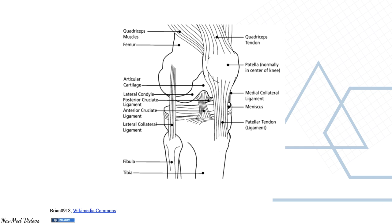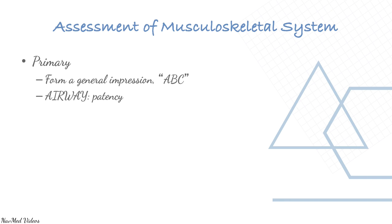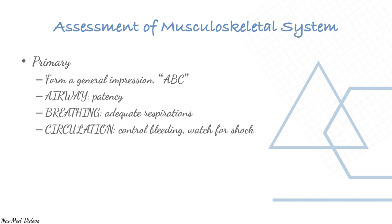Have a look at this knee joint — you can see the bones, muscles, and tendons around the knee joint. For assessment of the musculoskeletal system, any emergency begins with ABC assessment: A is airway patency, B is breathing with adequate respirations, C is circulation and controlled bleeding, and watch for shock.